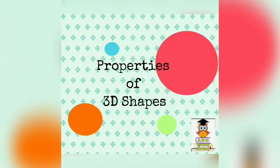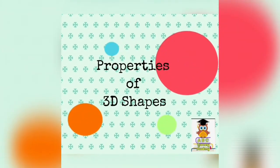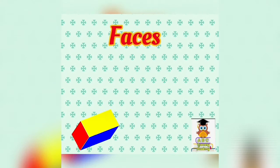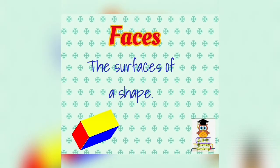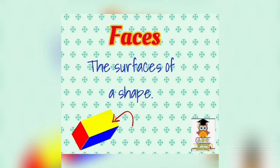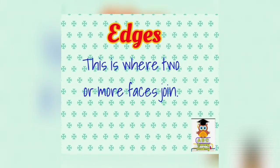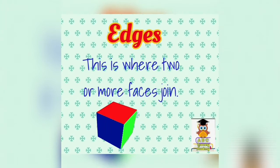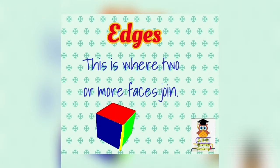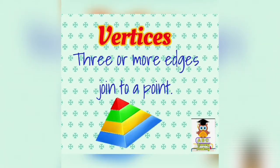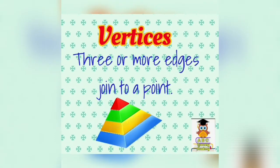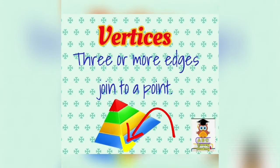3D shapes have three properties. Faces — the surfaces of a shape. This is the face. Edges — this is where two or more faces join; the yellow color is the edge. Vertices — three or more edges join to a point. This is the vertex.